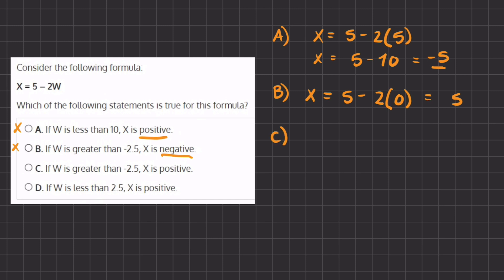Now let's move on to C. If W is greater than negative 2.5, X is positive. Alright, let's check this. We have X equals 5 minus 2 times a number that is greater than negative 2.5. Let's pick the number 5. We will get 5 minus 10 again, which gives us negative 5, meaning that C is incorrect.